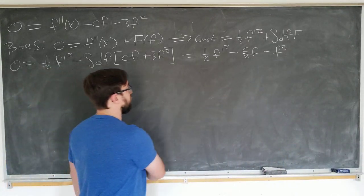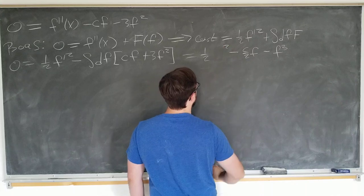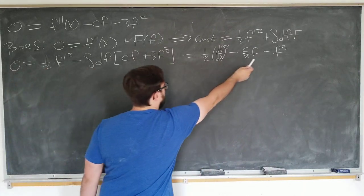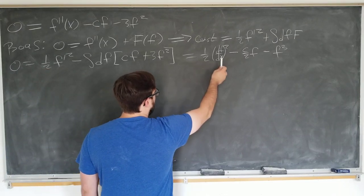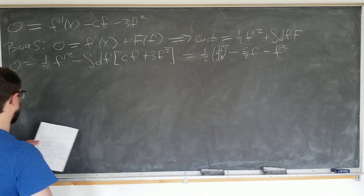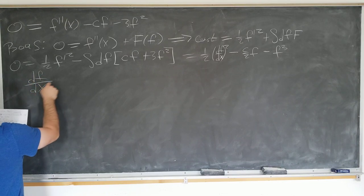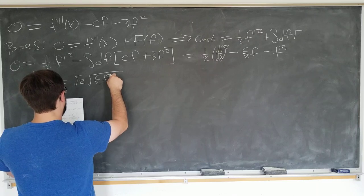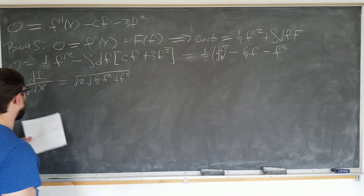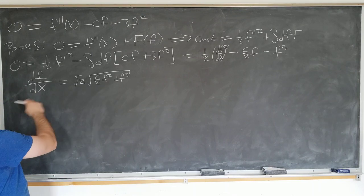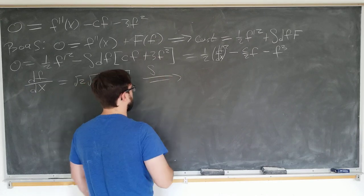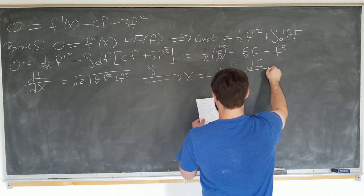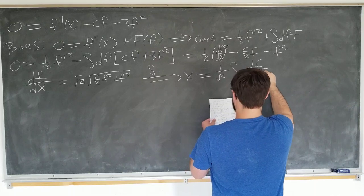Now what we want to do is rewrite f prime as df by dx. And then we want to move these over to the other side, multiply by 2, and take the square root to obtain the following differential relation: df by dx is equal to the square root of c over 2 f squared plus f cubed. Now we want to separate the variables, put all the f's on one side, x's on the other side, and integrate with respect to x and f respectively. To obtain x is equal to 1 over square root of 2 integral df by square root of c over 2 f squared plus f cubed.